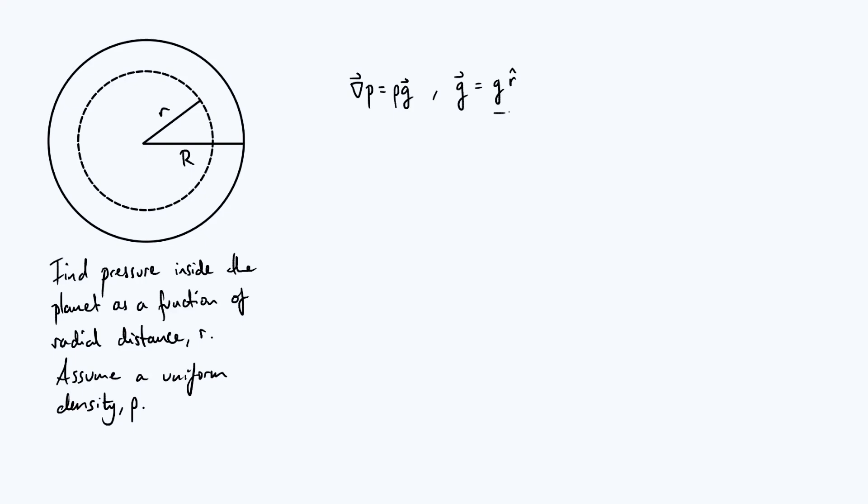But how can we figure out what this scalar g is? Well we can use Gauss's law for gravity, which says that the surface integral of the gravitational field is minus 4πG times the mass enclosed within the surface that you integrated over.